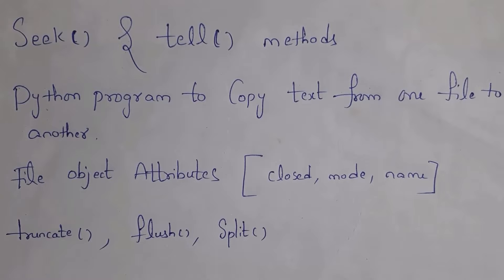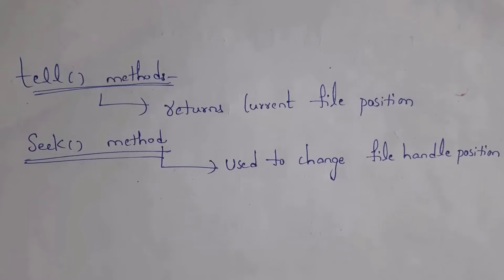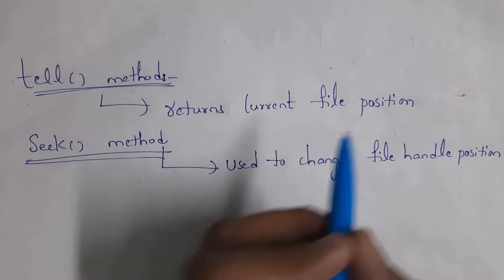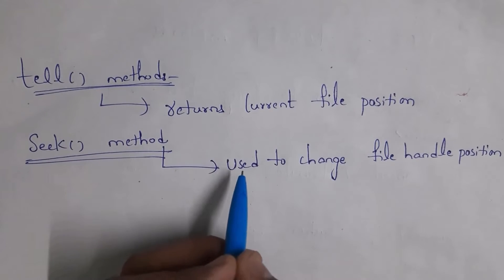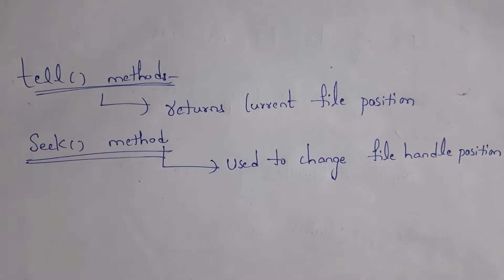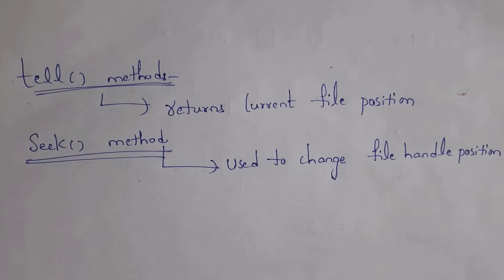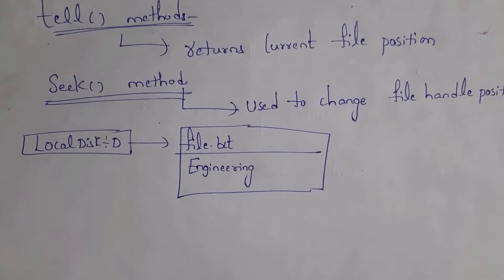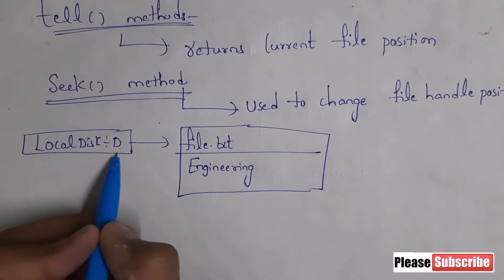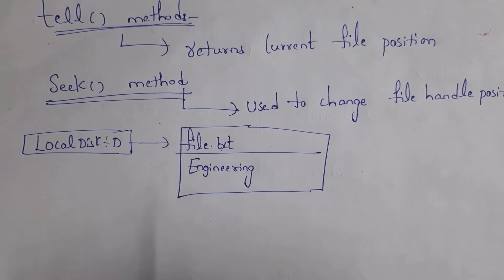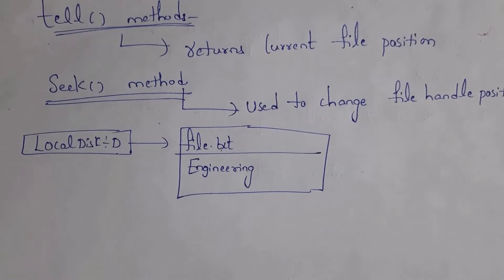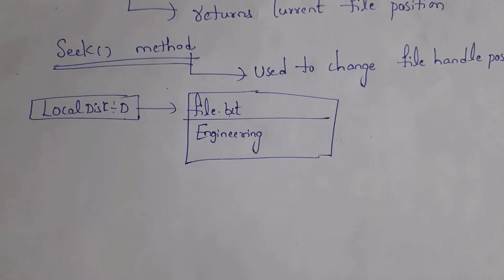Let's get started. First, I will explain the use of seek and tell methods. The tell method returns the current file position, whereas the seek method is used to change the file handle position. I will give an example so that you can clearly understand the use of seek and tell methods. There is a text file in local disk D. The text file name is file.txt and this file.txt contains the text 'engineering'. First, we need to open this file.